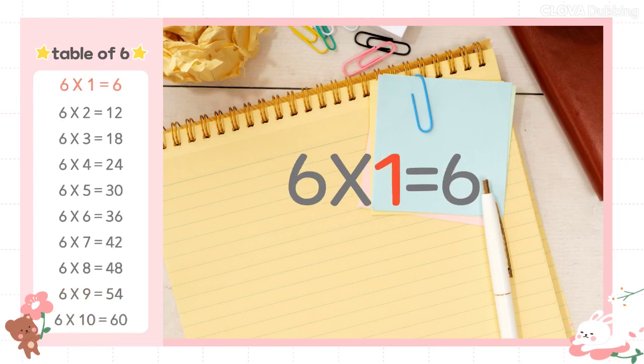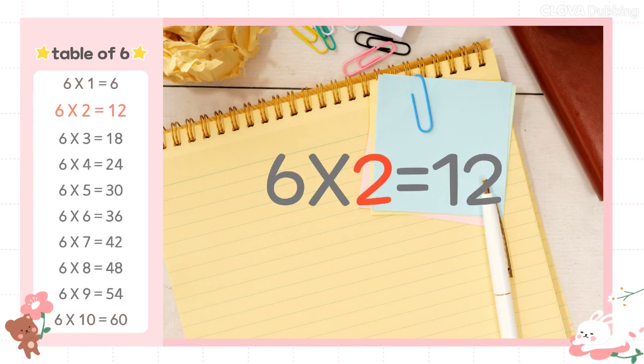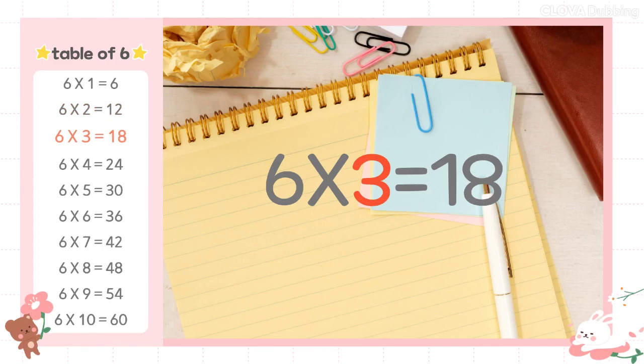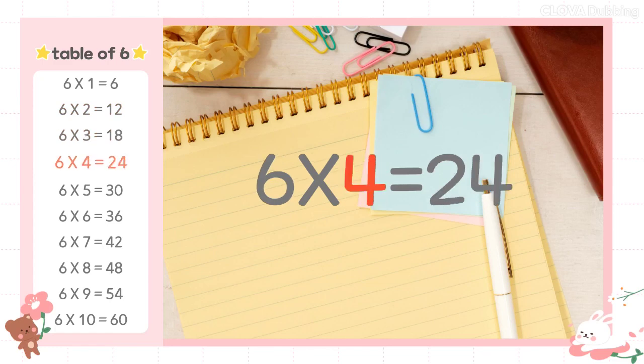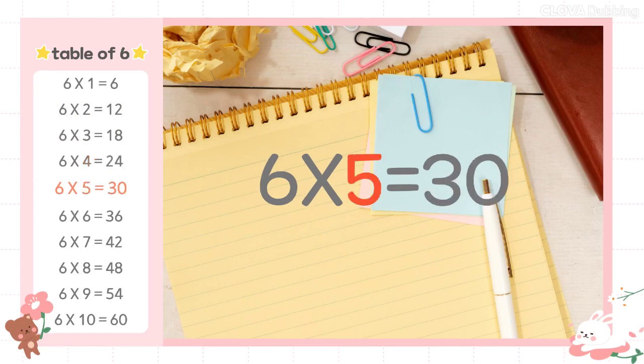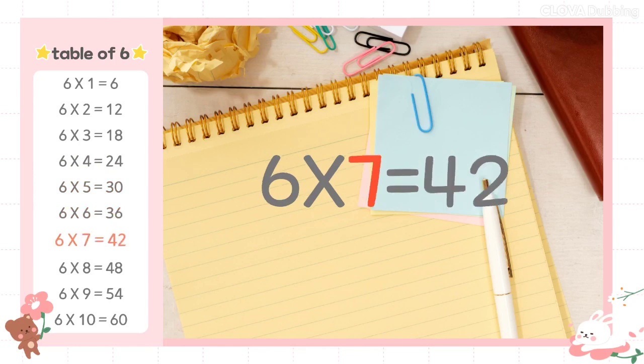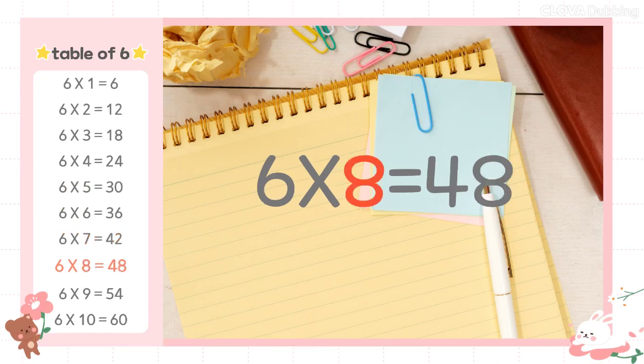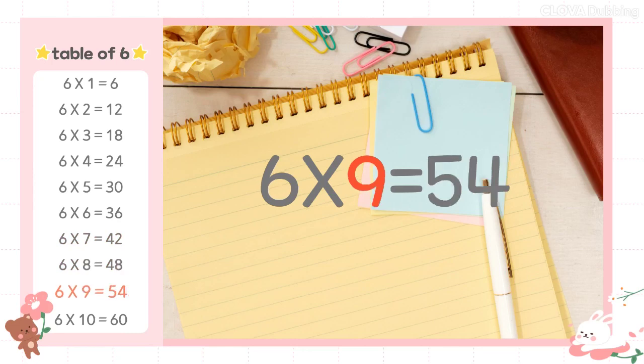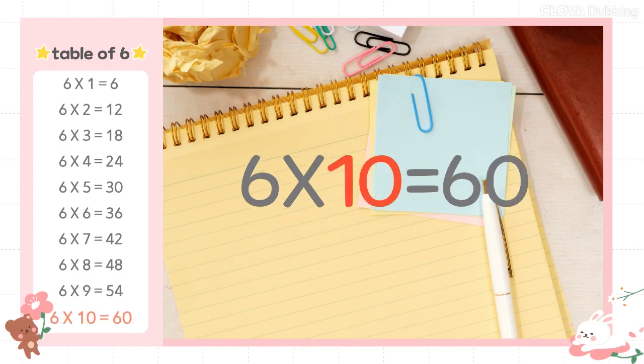6×1=6, 6×2=12, 6×3=18, 6×4=24, 6×5=30, 6×6=36, 6×7=42, 6×8=48, 6×9=54, 6×10=60